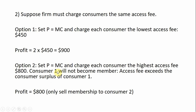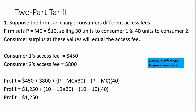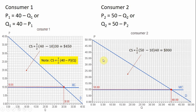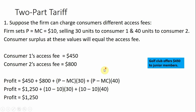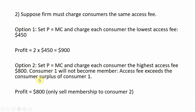Another option: set price equal to marginal cost and charge each consumer the highest access fee. Consumer two's access fee is $800 — the amount of consumer surplus. But if we did that, we would only sell to one customer. Consumer one will not become a member given that the access fee exceeds consumer one's consumer surplus. So profit under this strategy would just be $800 — only one membership sold, to consumer two.